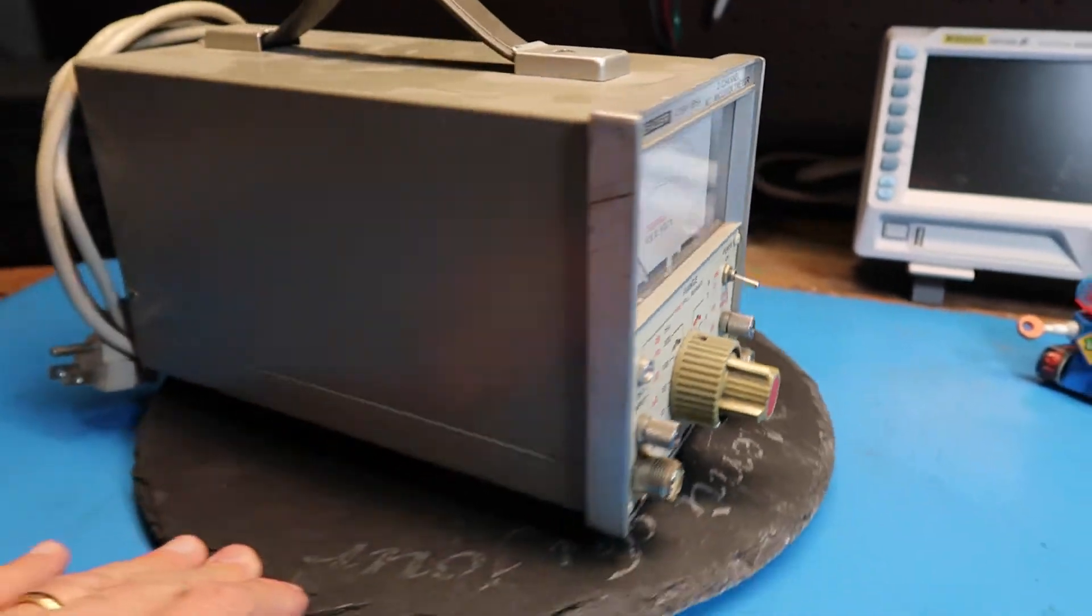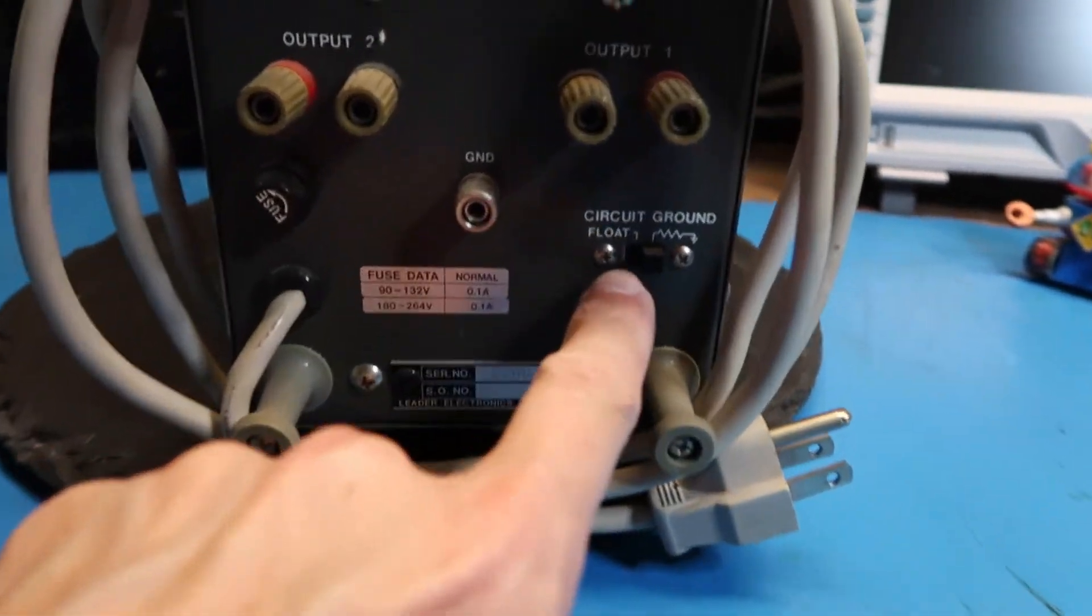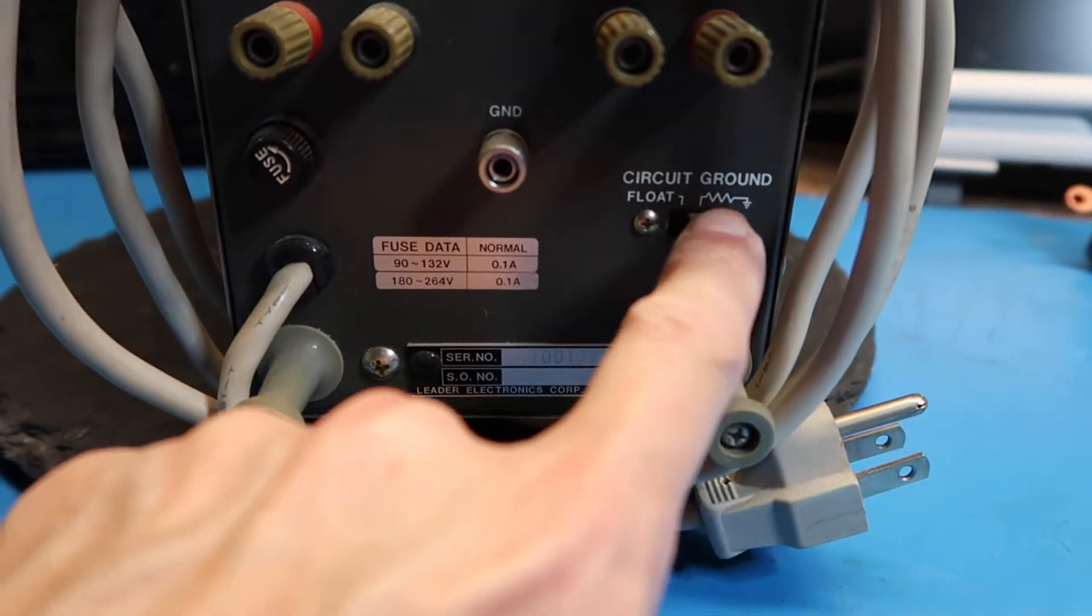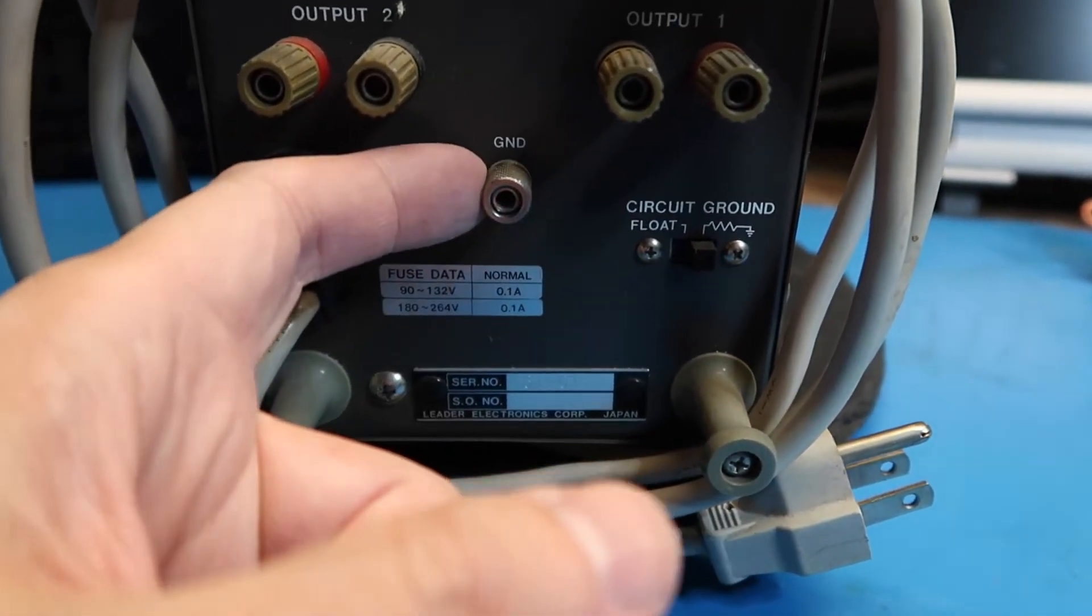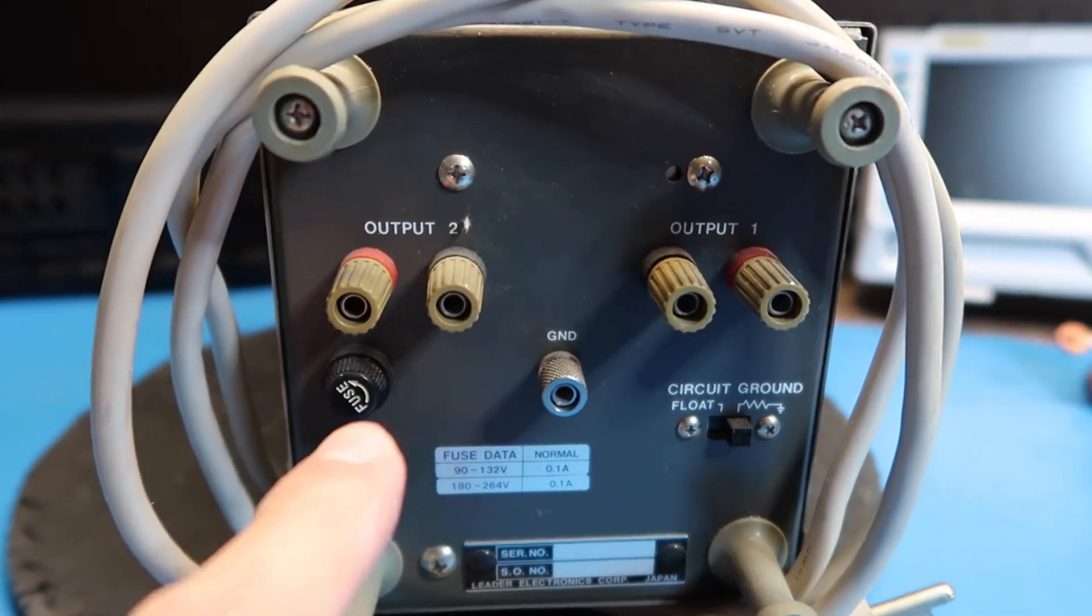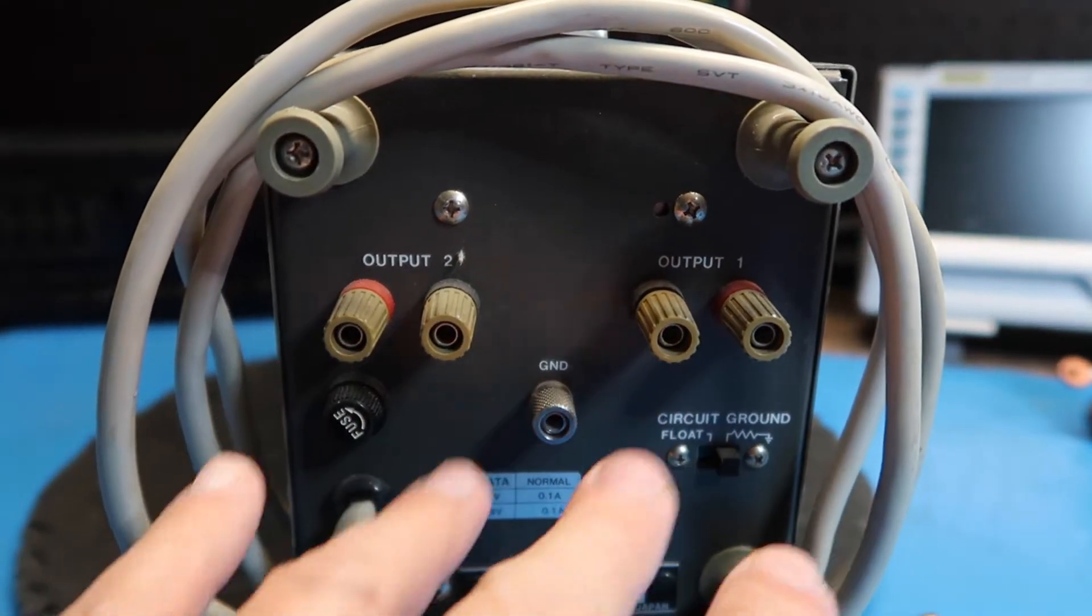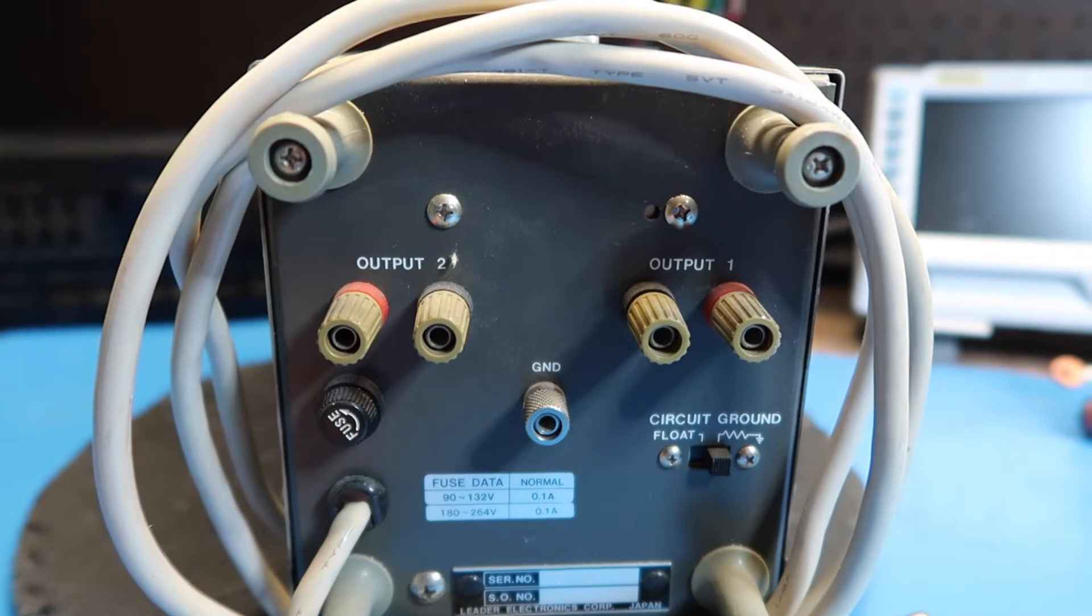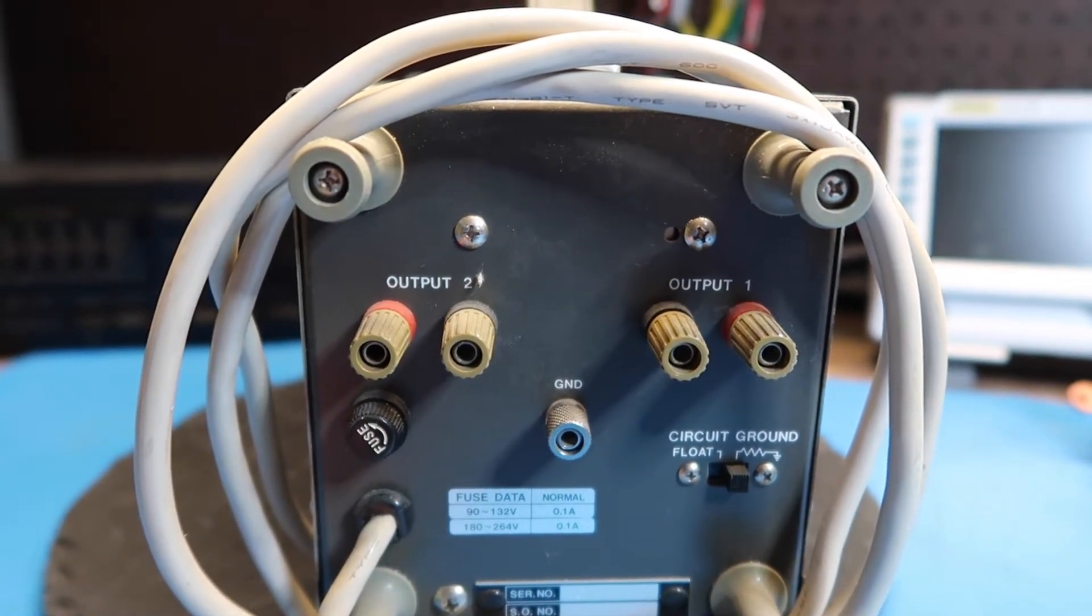I'm going to spin it around on the back. We've got the power cord, choice of floating or circuit ground. This is a chassis ground. We've got output 1 and output 2. So there's probably an internal amplifier that will output these signals amplified according to the scale. Maybe so you can look at them on an oscilloscope or something. We'll try that out.